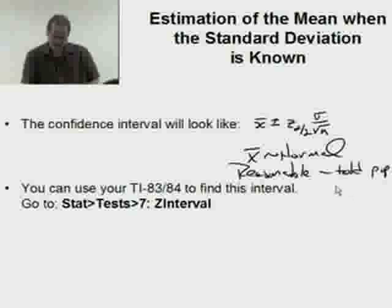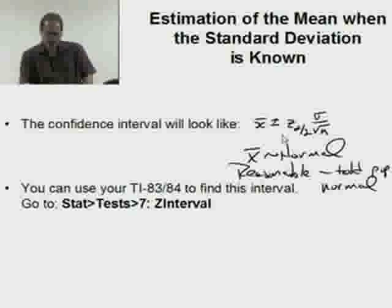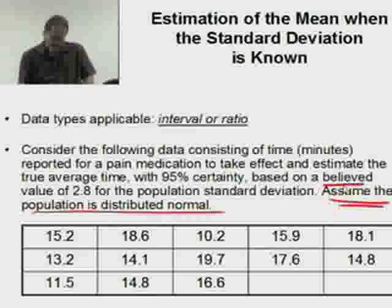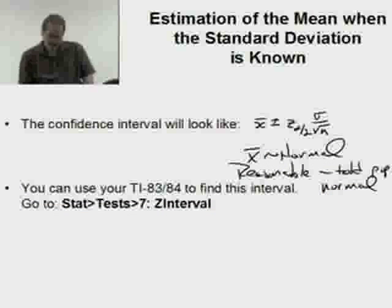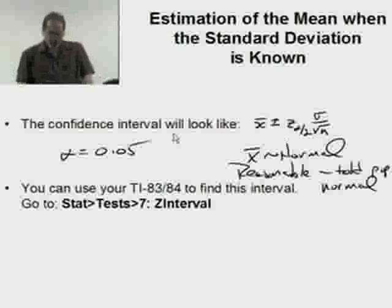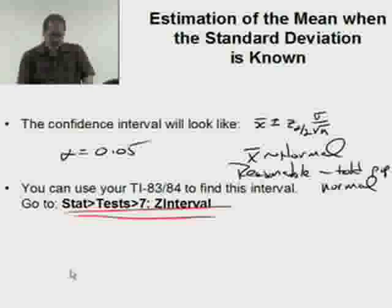Now to actually calculate the confidence interval, you can use inverse norm. We have 95% certainty, so alpha must be 0.05. You can find z of alpha over 2 using inverse normal. It told you sigma, you have the sample size because you have the data, you can calculate x-bar. You could actually do this by hand if you wanted. Personally, I prefer to let the calculator do all that busy work for me.